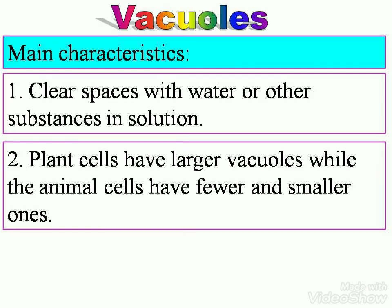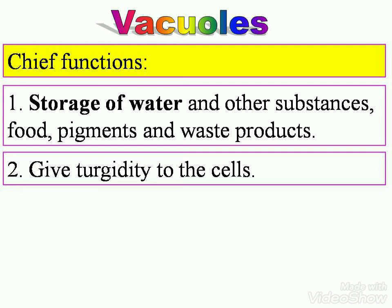Vacuoles. Main characteristics: clear spaces with water or other substances in solution. Plant cells have larger vacuoles while animal cells have fewer and smaller ones — remember this point. The difference between the two cells is the number and size of vacuoles. Chief functions: storage of water and other substances — food, pigments, and waste products. Vacuoles also give turgidity to the cells.